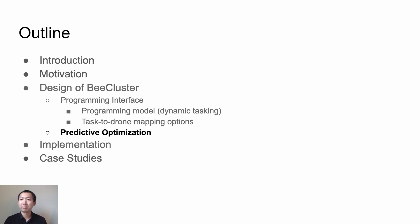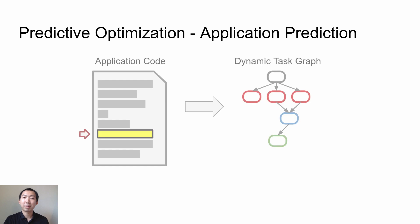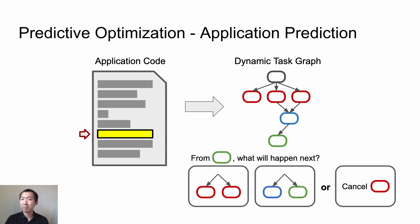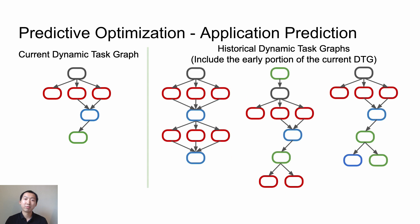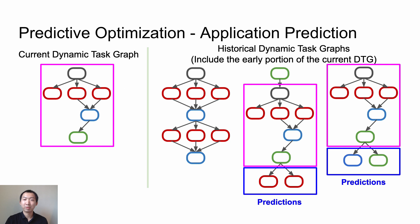Next, we will talk about the predictive optimization. The first step is to predict the application's future behavior. In our programming model, the application logic is fully captured by the dynamic task graph. So the prediction problem turns out to be: given the current task graph, predict what will happen next — for example, new nodes might be added to the graph, or existing tasks might be cancelled. We make this task graph prediction by matching the current task graph with historical task graphs from previous runs of the application, as well as the early portion of the current task graph. When a match is found, we look at what happened next in the matched task graph and use that as prediction. The assumption is that what happened before may just happen again.